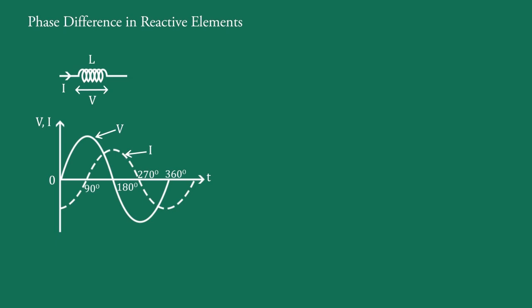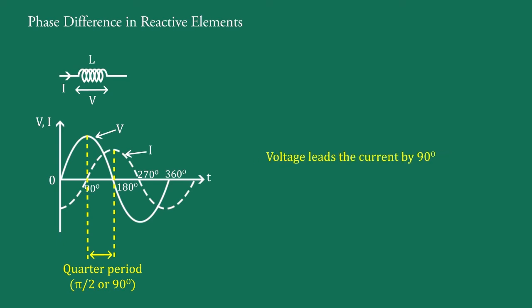If the inductance is pure, then this phase difference is 90 degrees. That is, the current in the inductance reaches its maximum value after a quarter period of when the applied voltage takes its maximum value. Or, we say that the applied voltage is ahead of the current by 90 degrees — that is, the applied voltage leads the current by 90 degrees.